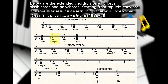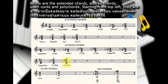C9 suspended fourth, C11, C minor 11, C major 13, C13, C minor 13. The altered chords: C major 7 flat 5, C7 flat 5, C augmented 7, C7 flat 9, C7 sharp 9, C augmented 7 flat 9, C augmented 7 sharp 9.